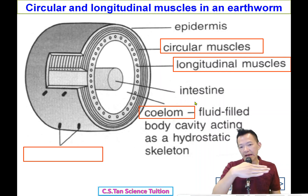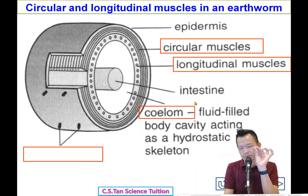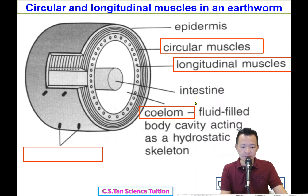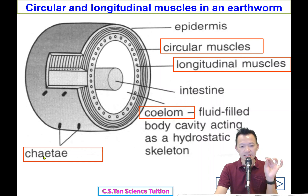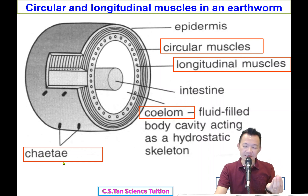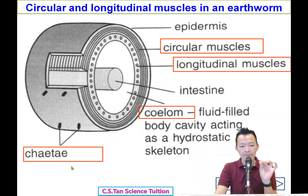On the outer surface of the earthworm's body, there are many tiny structures that cannot be seen by the naked eye. We call these setae (chaetae). I checked many dictionaries and I pronounce it as setae. These are tiny hair-like structures on the surface of the earthworm's body.